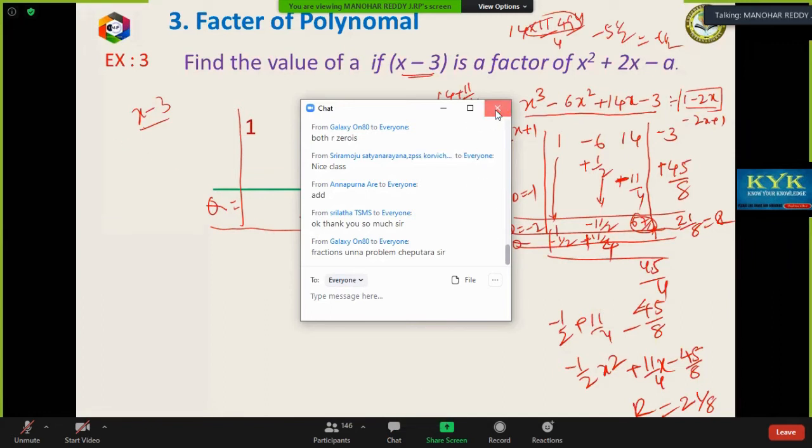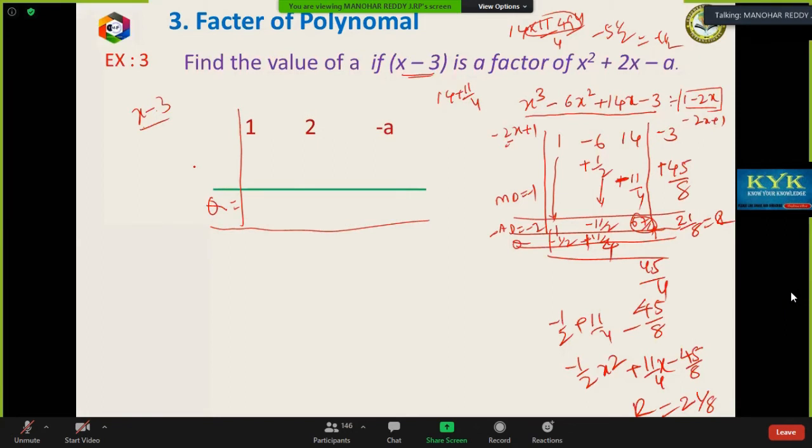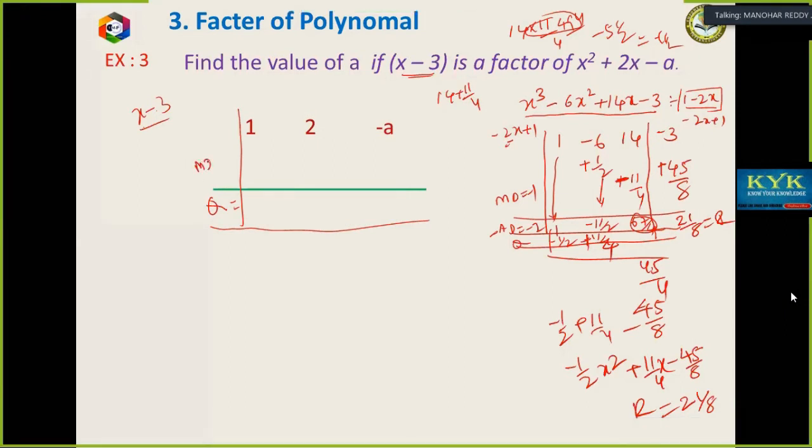You put a minus three, modify divisor, move across, control. X minus three is a factor, so the remainder is zero. Right, first place.